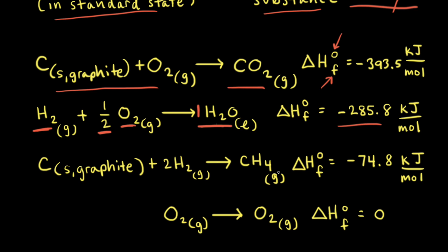We can do the same thing for the formation of one mole of methane, CH₄. We already know that the most stable form of carbon is graphite and the most stable form of hydrogen is hydrogen gas. The standard change in enthalpy of formation for one mole of methane is equal to negative 74.8 kilojoules per mole.